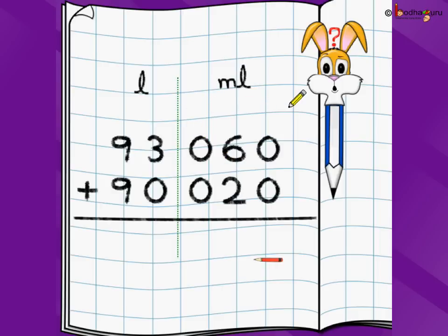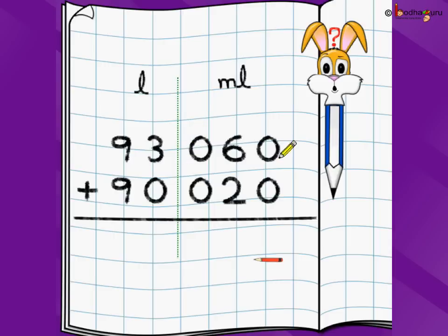We write it as 060 because this area represents milliliters and one liter equals 1000 milliliters, which has three zeros. So we write three digits — 60 only has two digits, so we add a zero before it: 060. Similarly, 90 liters and 20 milliliters is written as 90 and 020.